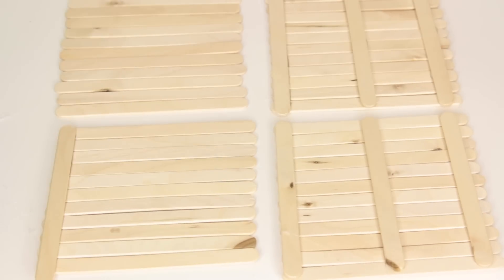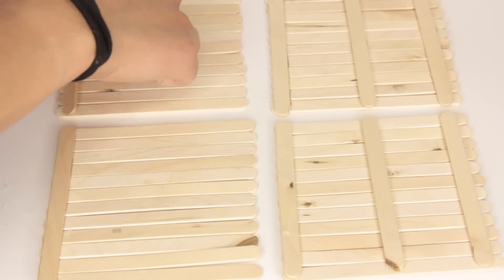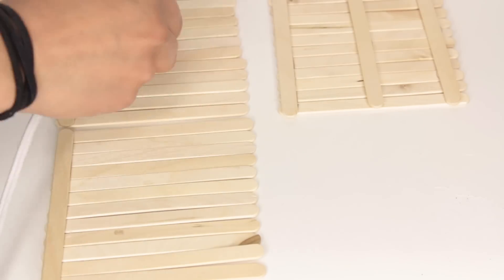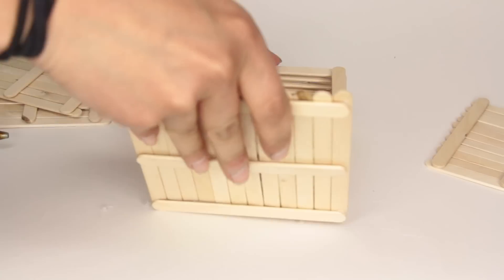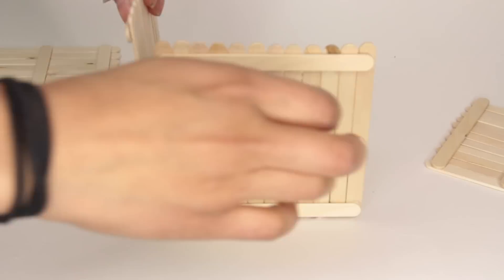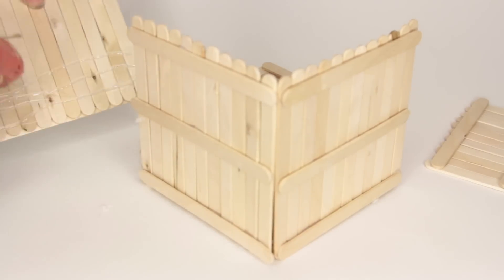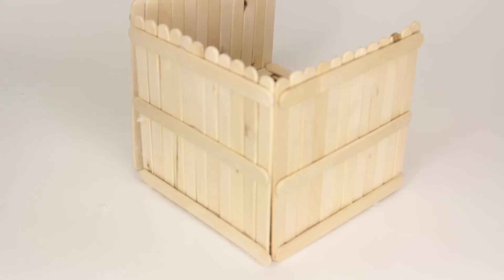Now the great thing about these DIYs is you don't need a hot glue gun to do this. You can use just regular school glue if you'd like. Once you have all four sides done, you can go ahead and glue them to your box. I glue them so that the side that has most of the popsicle sticks is touching the box.